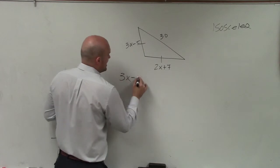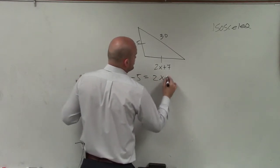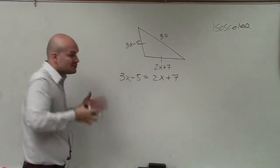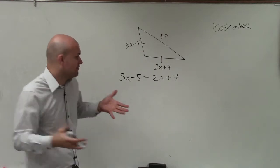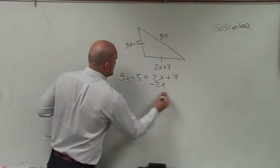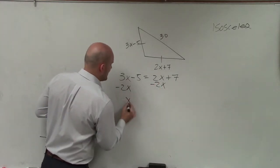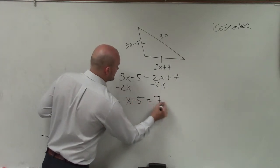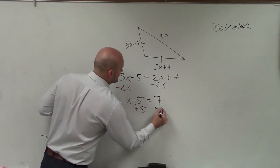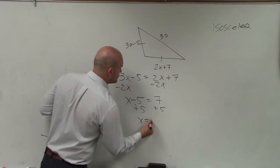So therefore, I can write an equation: 3x minus 5 equals 2x plus 7. Now I have an equation that I can solve for x. To solve for x, I'll subtract 2x on both sides, and I have x minus 5 equals 7. Add 5, and x equals 12.